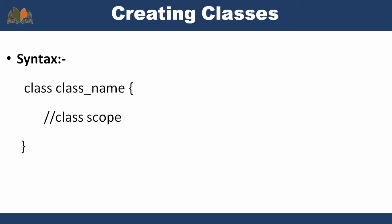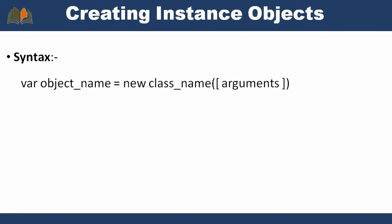To create an instance of a class we need to use the new keyword followed by the class name. The syntax is: var objectName = new ClassName(arguments). The arguments are optional — if we are using a parameterized constructor we pass those arguments, but if we are using a default constructor there is no need to pass any argument.